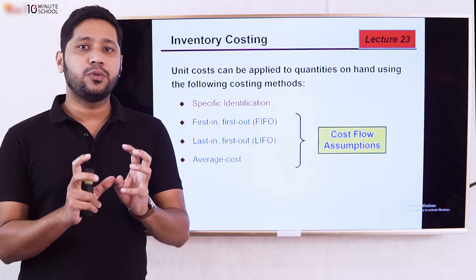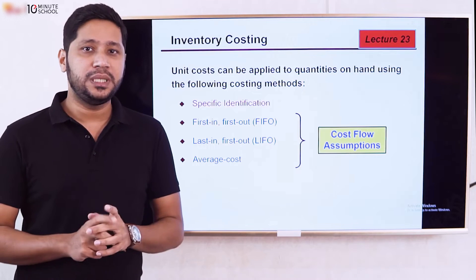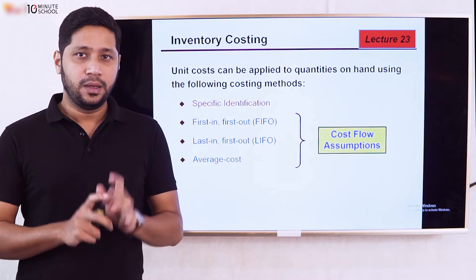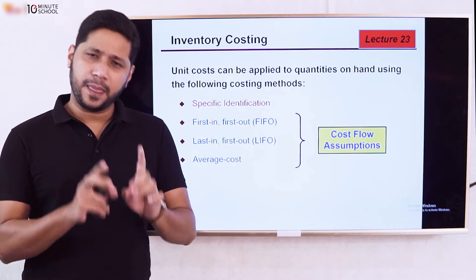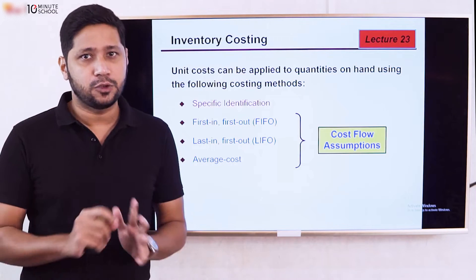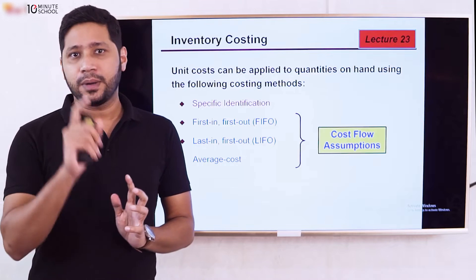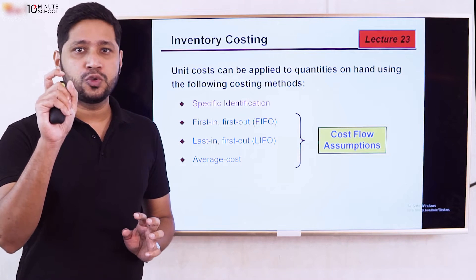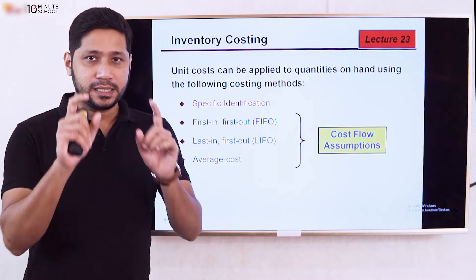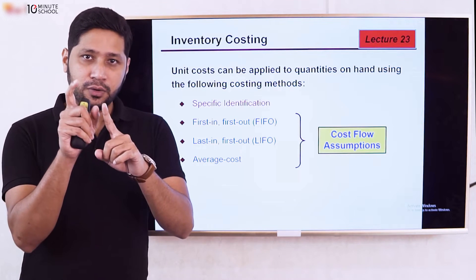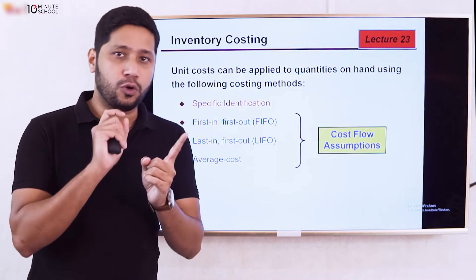The problem is: when we sell items, we have a 'cost of goods sold' figure. The key question is which cost to assign to the goods sold, since items were purchased at different prices.